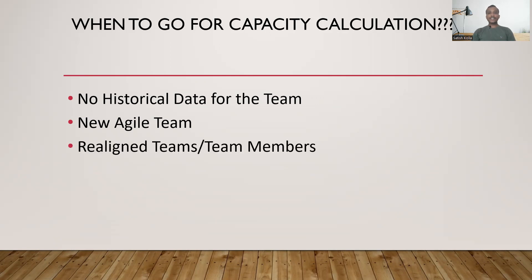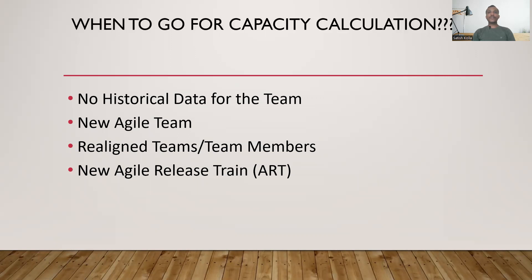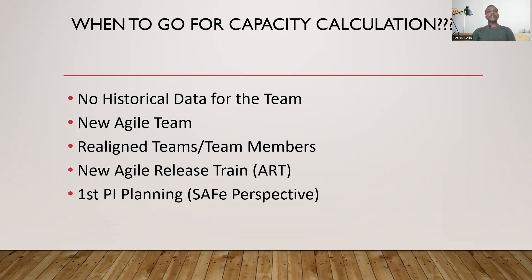And even if it is an existing team or a well-matured team, if in case the team is realigned or repurposed — either the whole team or the team members — that's when we will also be considering the capacity calculation. From the SAFe implementation perspective, if it is a brand new Agile Release Train, or if it is a first PI planning, we will be considering the capacity calculation.